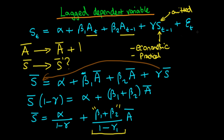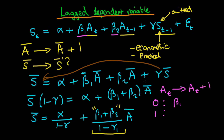Generally, a single lag of the dependent variable is sufficient for most purposes. Now, what's the effect of a temporary increase in advertising? Say advertising goes up by one unit just for that particular period, so A-t goes to A-t plus 1. In the period in which it occurs, the direct effect is given by beta-1. In the next period, there's a lagged advertising effect given by beta-2, plus an effect due to the increased sales in the last period through the gamma term — so we get gamma times beta-1.